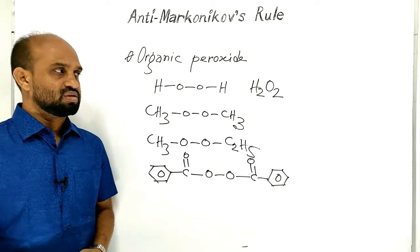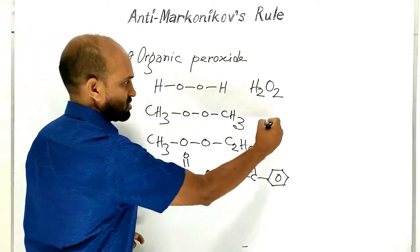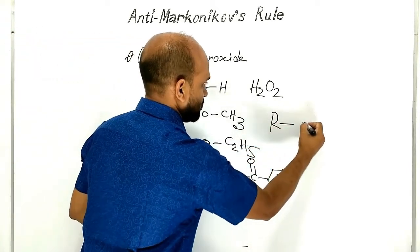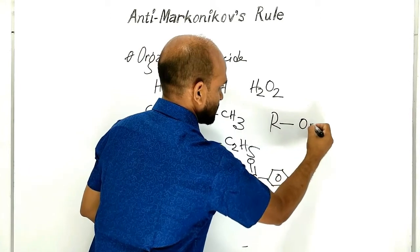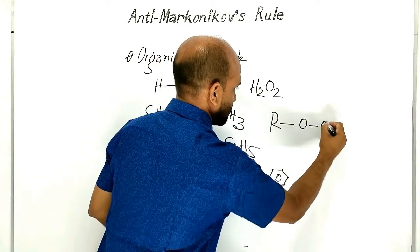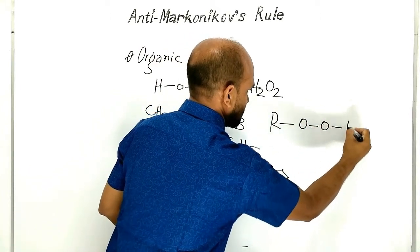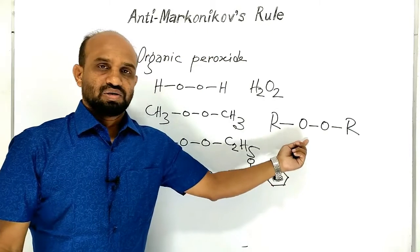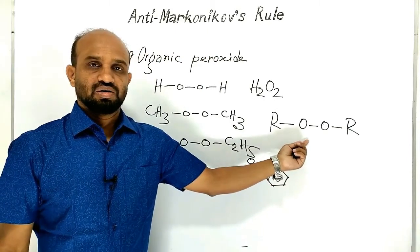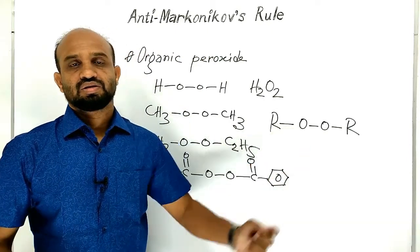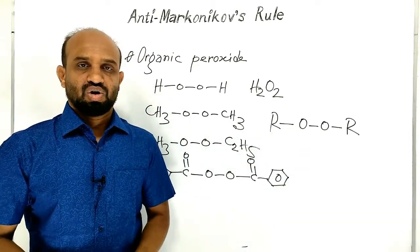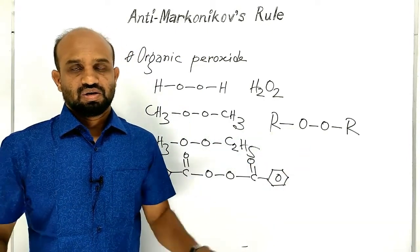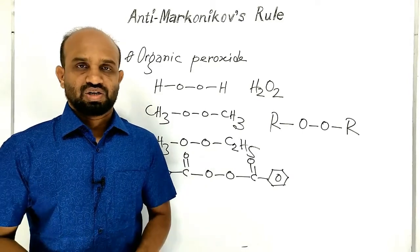Generally, we can write organic peroxide as: organic group — oxygen — oxygen — another organic group. This is the general structure of an organic peroxide.